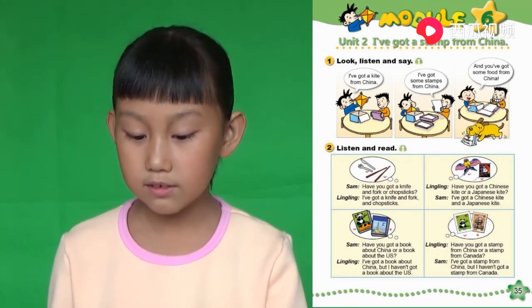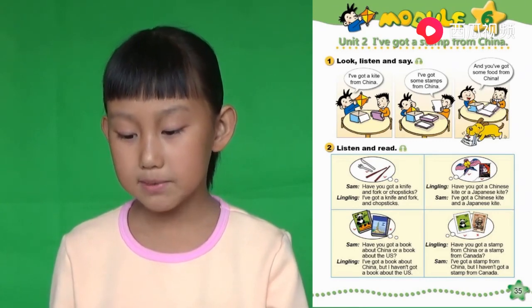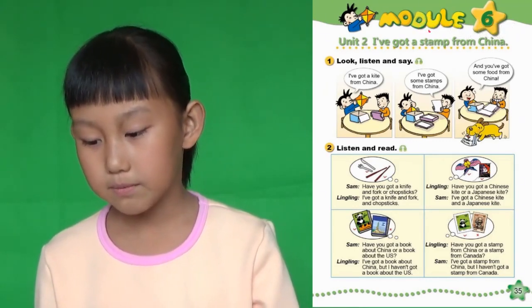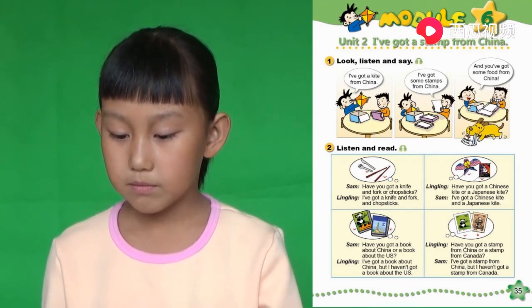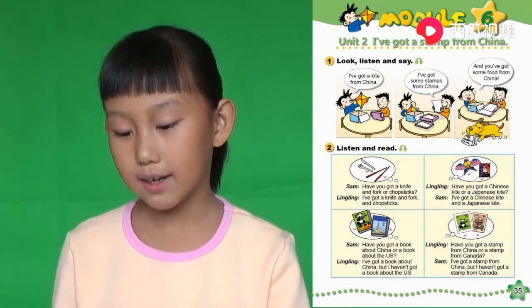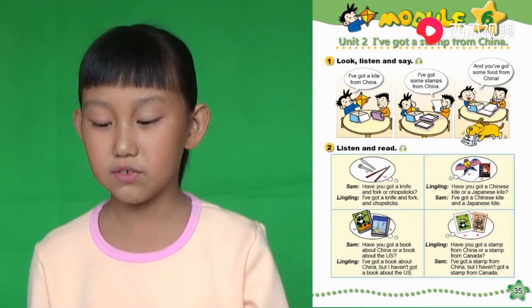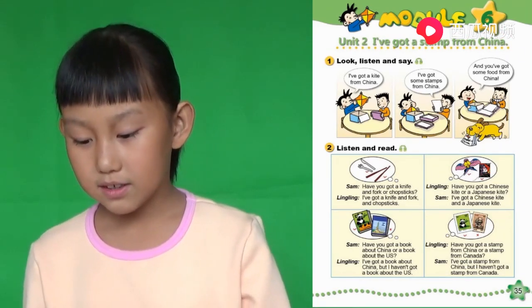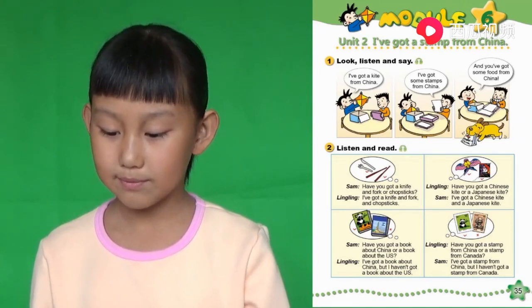我有一些来自中国的风筝。 我有一些来自中国的邮票。 And you've got some food from China. 可你有一些食物来自中国。